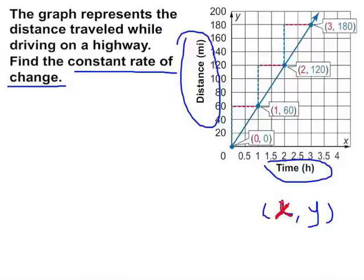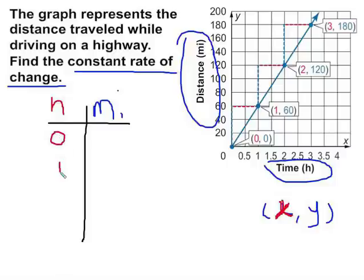So from this information in order to figure out what the constant rate of change is, it is helpful to create a table. So I know I'm looking at time in hours versus my distance in miles. And I'll even color coordinate this as well. Well, I know that I'm looking at the times of zero, one hour, two hours, and three hours. And I know that from my table, at zero hours I've traveled zero miles. At one hour I've traveled 60 miles. I know at two hours I've traveled 120 miles. And at three hours I've traveled 180 miles.